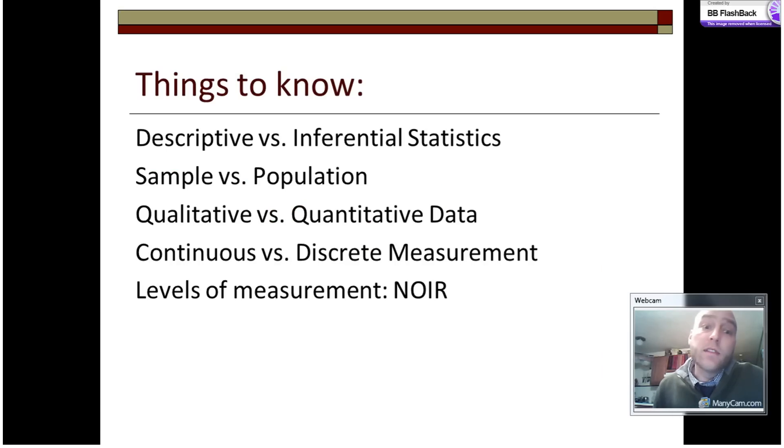The things that we are going to cover today are five basic things. First, the difference between descriptive and inferential statistics. Second, the difference between a sample and a population. Third, the difference between qualitative and quantitative data. Fourth, continuous versus discrete measurement. And lastly, the levels of measurement: nominal, ordinal, interval, and ratio.